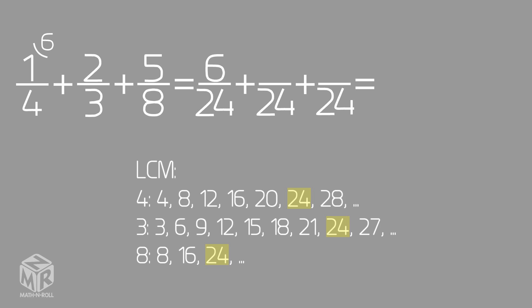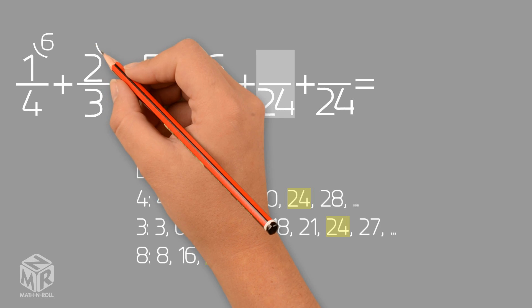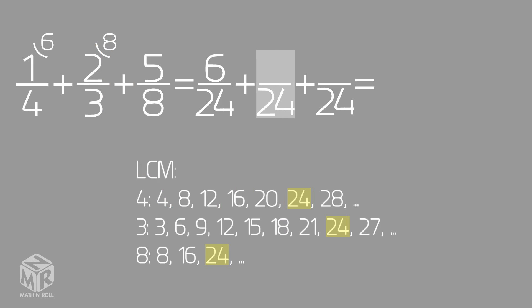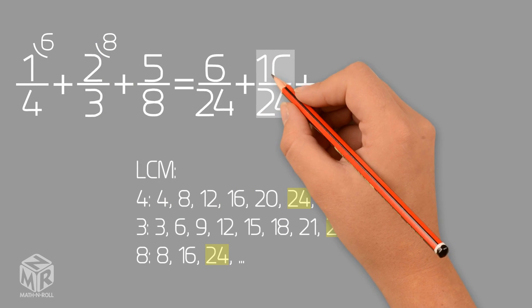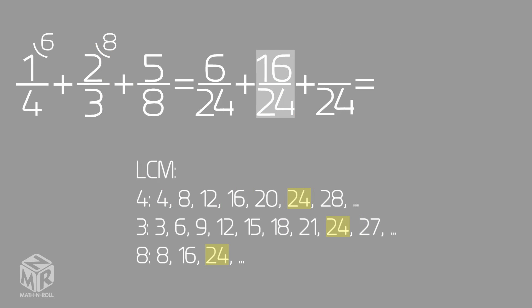To find the equivalent fraction of 2 thirds, we multiply both parts of the fraction — the numerator and the denominator — by 8. This gives us 15 over 24.